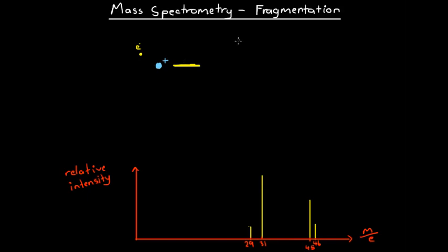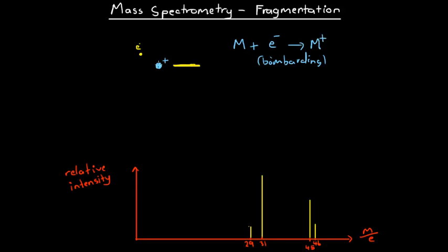...then we can say that if we start with molecule M and we add an electron — this is one of the electrons in the electron beam, a bombarding electron — then what we end up with is a positively charged ion which has the same chemical formula as our original molecule, however it now has a positive charge, and we get two electrons.